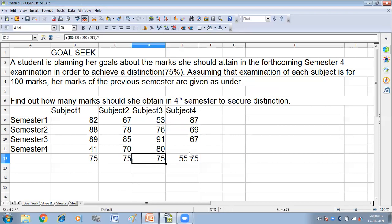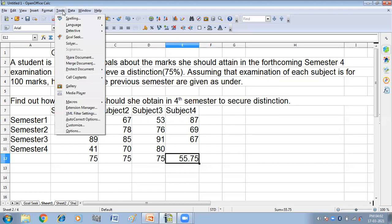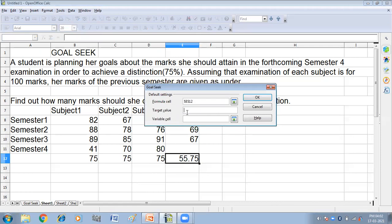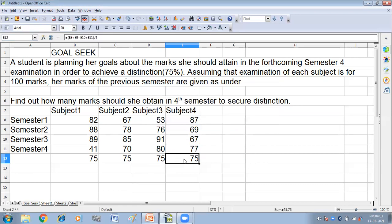Then again, my target cell is this. Click on Tools and then Goal Seek option. Target value is 75 and the variable cell is this, that is E11. Click on OK, yes. Now I have got 77 marks in subject 4 to achieve 75 percent. So in this way we have achieved 75 percent in all the subjects.